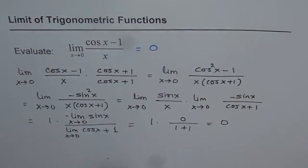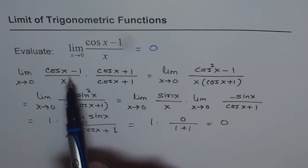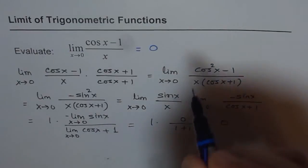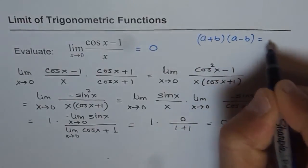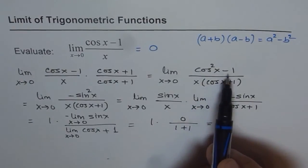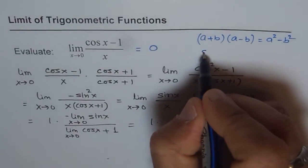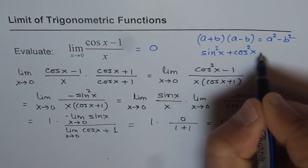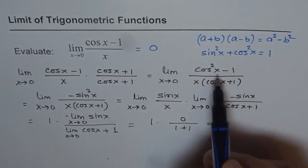In the first step, we applied the technique of multiplying and dividing by the conjugate to get a difference of squares. We used (a + b)(a - b) = a² - b² to get cos squared x minus 1. Then we used the identity sin²x + cos²x = 1, which means cos²x minus 1 equals minus sin²x.